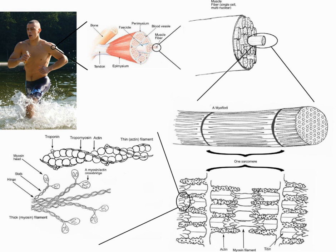Nerves that control skeletal muscles in mammals correspond with neuron groups along the primary motor cortex of the brain's cerebral cortex. Commands are routed through the basal ganglia and are modified by input from the cerebellum before being relayed through the pyramidal tract to the spinal cord and from there to the motor end plate at the muscles. Along the way, feedback such as that of the extrapyramidal system contributes signals to influence muscle tone and response. Deeper muscles such as those involved in posture often are controlled from nuclei in the brain stem and basal ganglia.